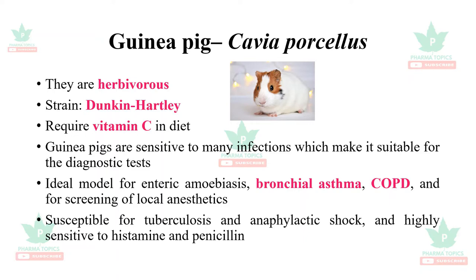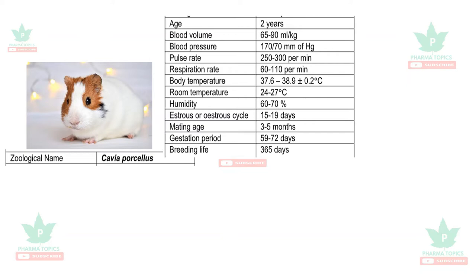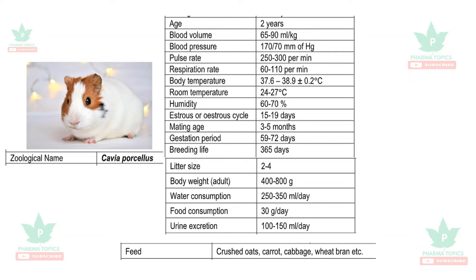The Cavia porcellus data: the lifespan is about two years, body temperature is 37.6°C. The estrus cycle is 15 to 19 days, compared to four to five days in rats or mice. The gestation period is 59 to 72 days, breeding life is 365 days, and litter size is two to four per pregnancy. Body weight is 400 to 800 grams, water consumption is 250 to 350 ml per day, and food consumption is 30 grams per day. Since it is herbivorous, it can be given crushed oats, carrot, cabbage, wheat bran, etc.